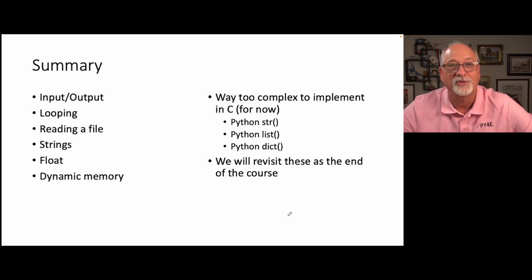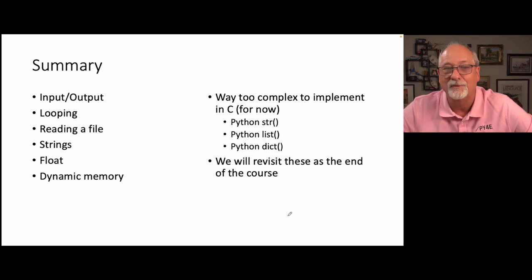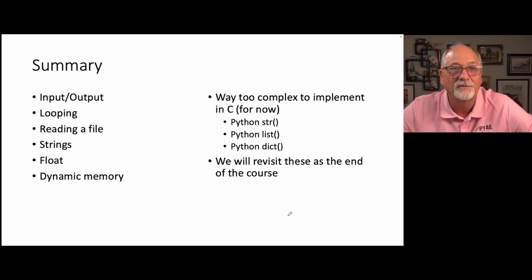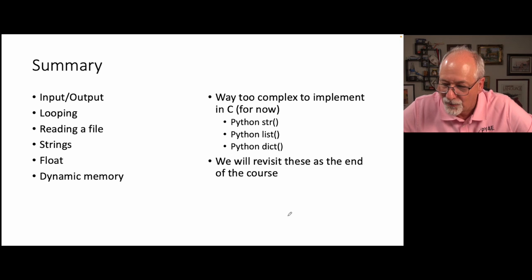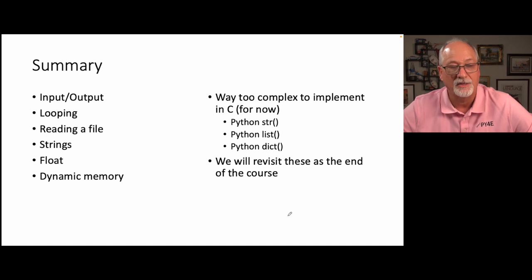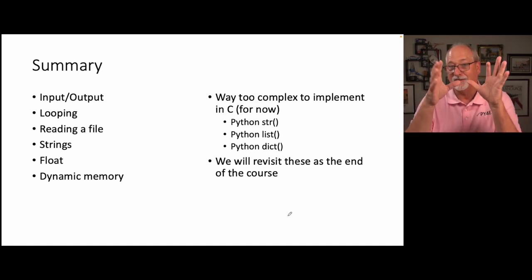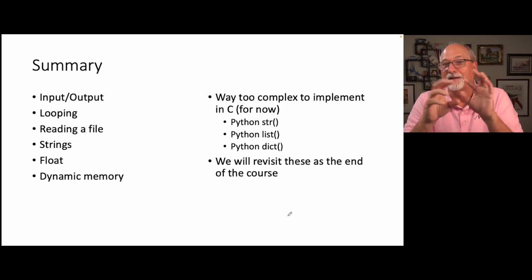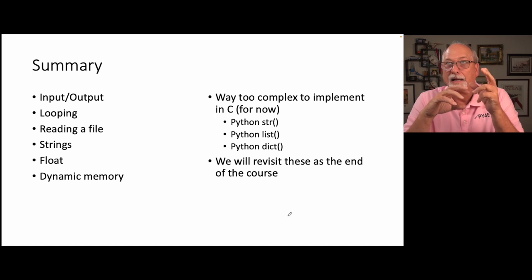That's a lot of Rosetta Stone. We've talked about input/output, looping, reading a file, strings as character arrays, floats, and dynamic memory. Later chapters will explore structs, pointers, and how to implement Python-style strings, lists, and dictionaries in C. There's a little foreshadowing — we saw rstrip and lstrip, and before this course is over we're going to come back and build even more.